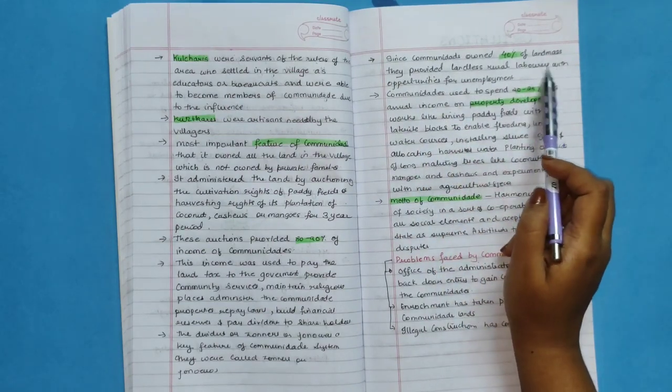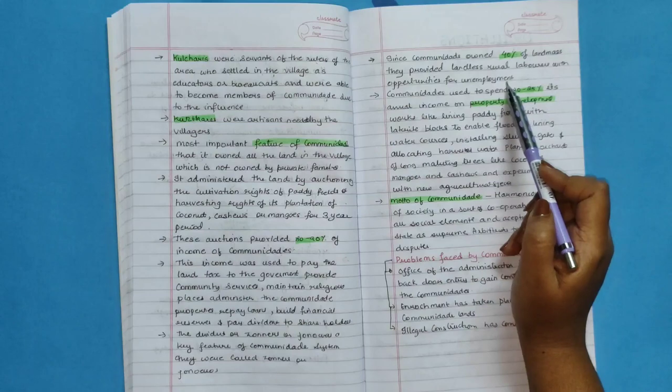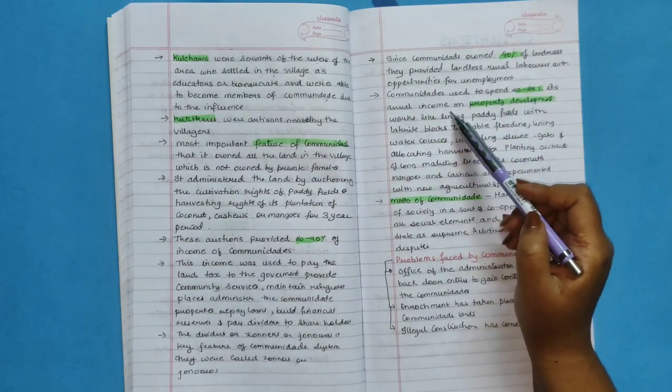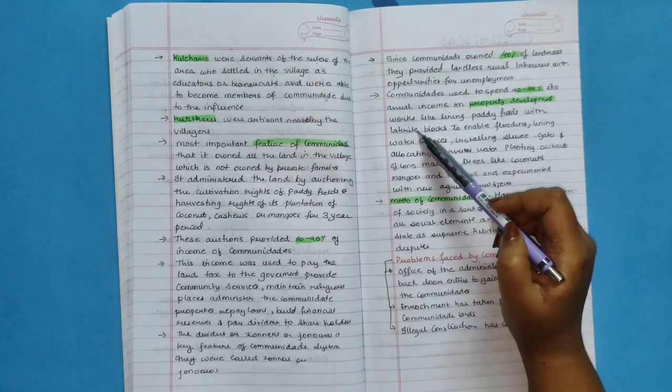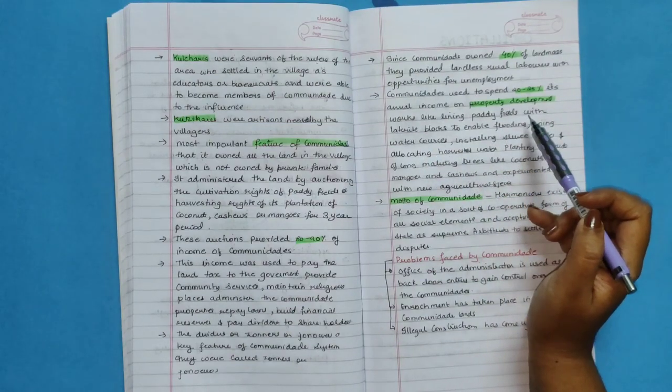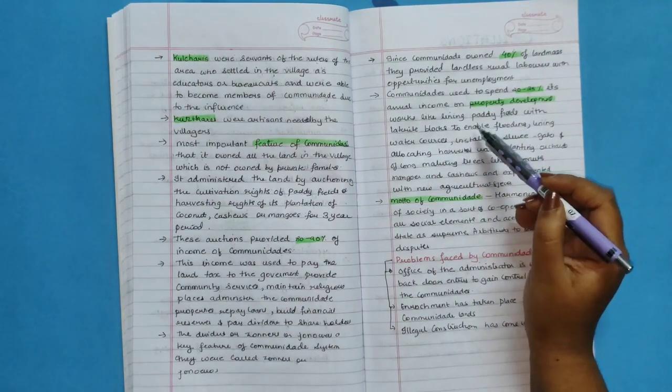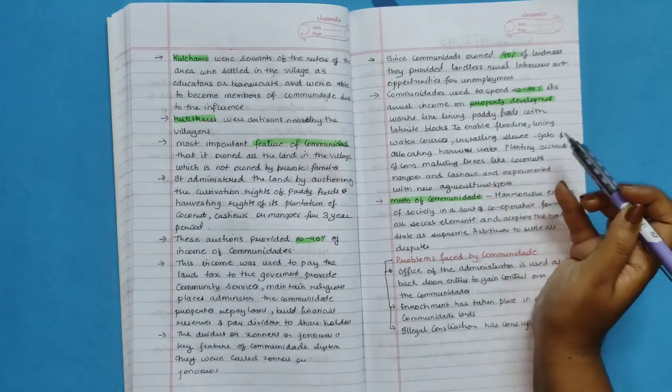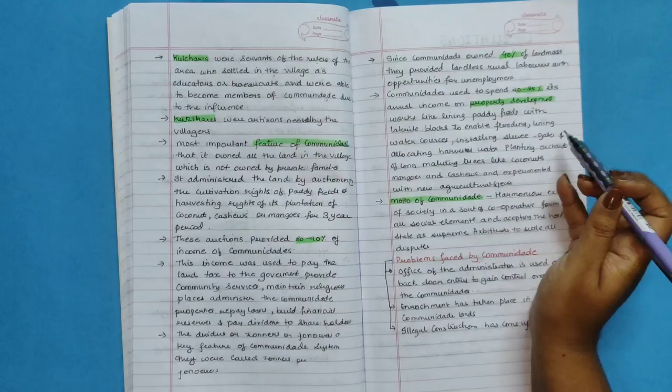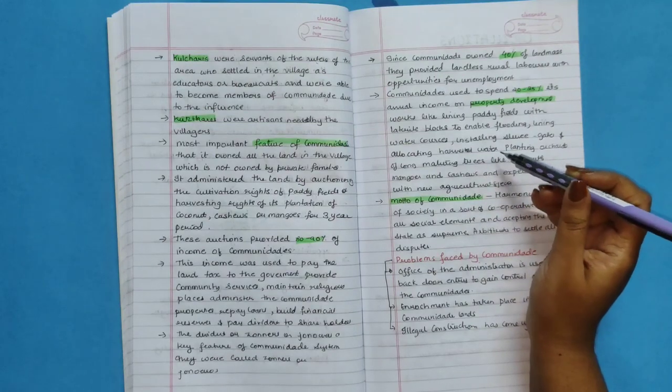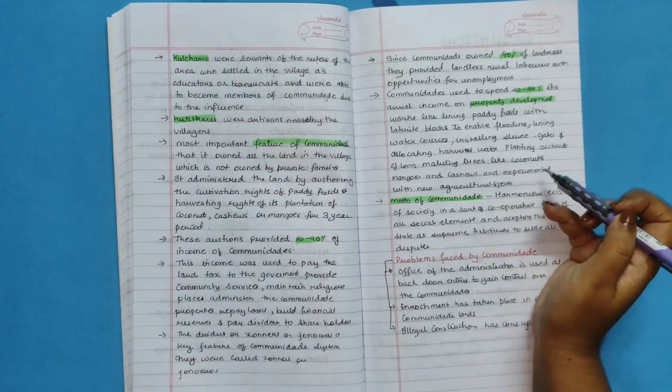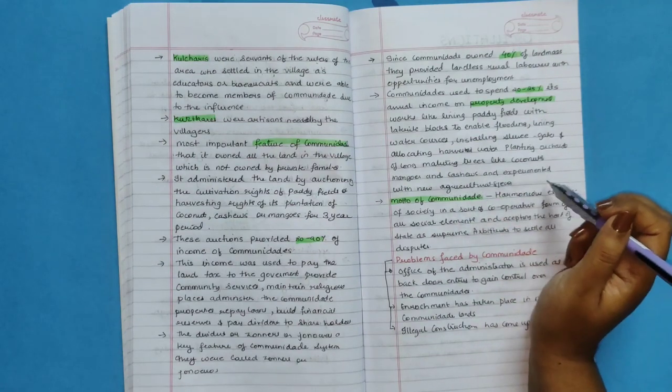Since Comunidade owned 40 percent of landmass, they provided landless rural laborers with opportunities for employment. Comunidade used to spend 20 to 25 percent of its annual income on property development, work like lining paddy fields with laterite blocks to enable flooding, lining water courses, installing gates, and allocating harvest water, planting orchards of long-maturing trees like coconuts, mangoes, and cashew, and experimented with new agriculture species.